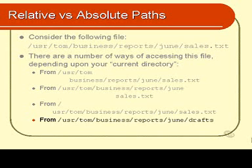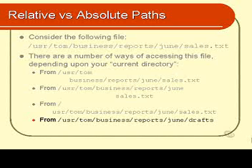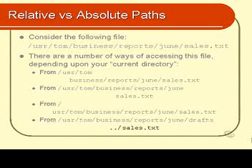Another example — a trickier one. What if you were in a subdirectory of dune called drafts? How would you access sales.txt then? Think about what we talked about in the last chapter with dot and dot-dot. Is there a way to go up a level to the parent directory? Yes, there is. It is ../sales.txt — in other words, go back up to the parent directory. If you are in the drafts directory, your parent directory is the dune directory, and inside dune you will find sales.txt.